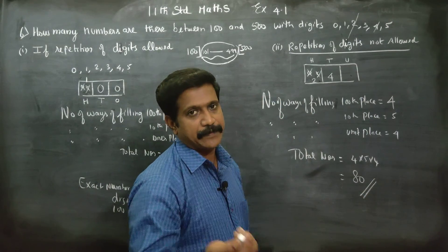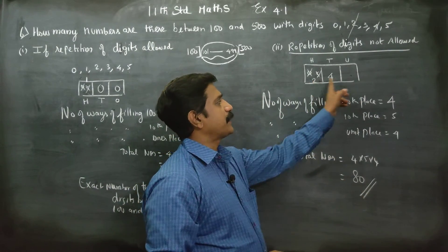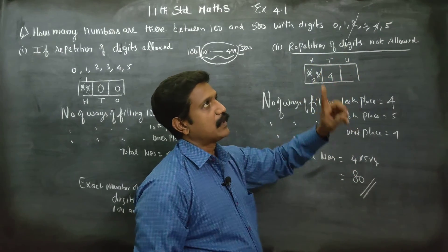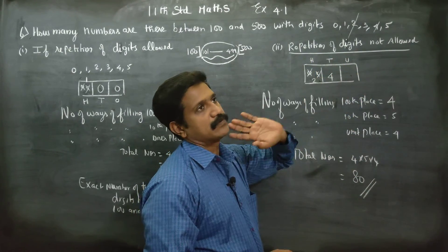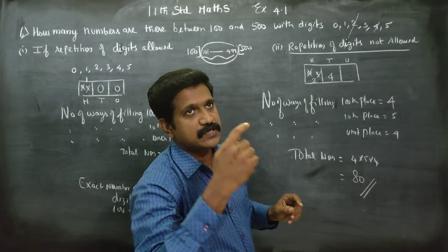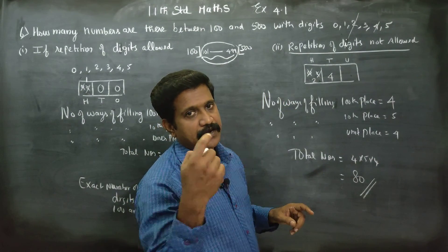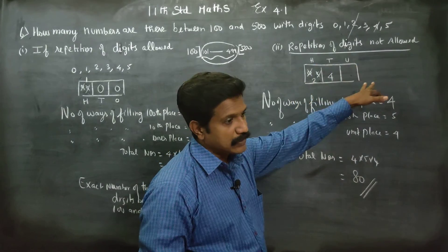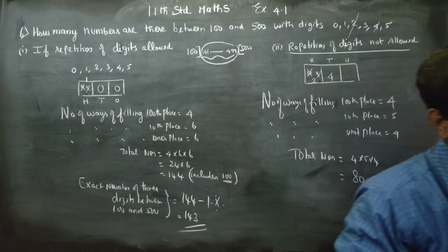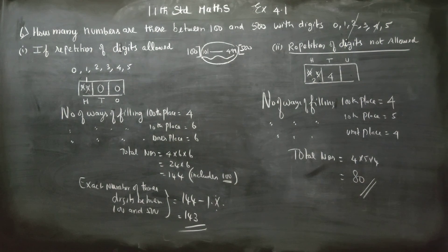Here, 100 is not an issue. Since repetition is not allowed, 1, 0, 0 cannot be formed — you cannot repeat 0. So 100 is automatically not possible. Thank you.